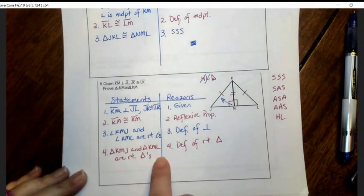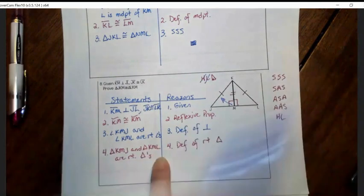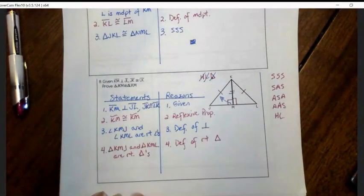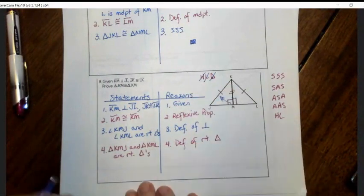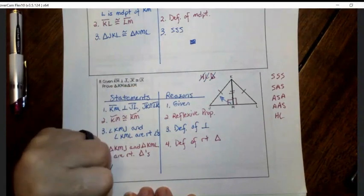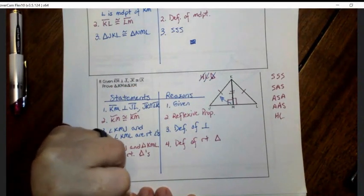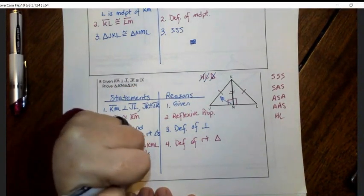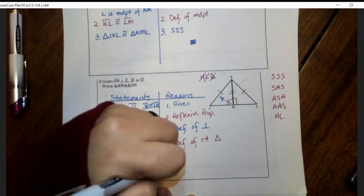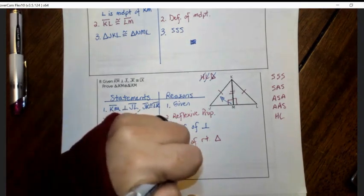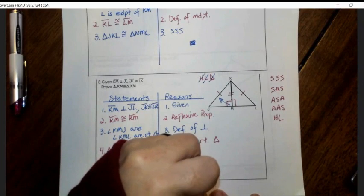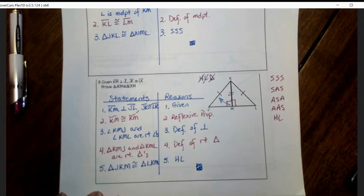Okay, so I have put in the proof that we have right triangles so I can cross off the third thing I have in my to-do list. Everything's crossed off so I can write the proof statement. And triangle KMJ is congruent to triangle KML. And my reason is HL. Okay, that's it for that one.